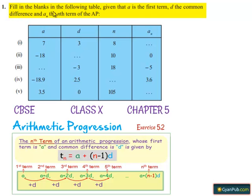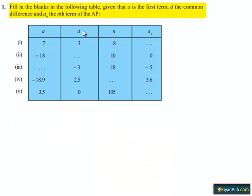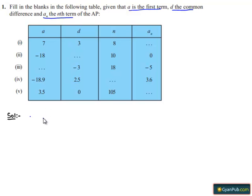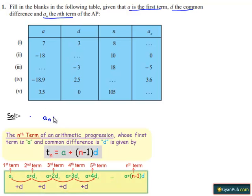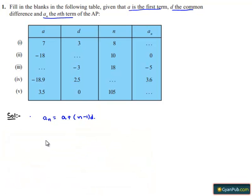Moving on to the first question: fill in the blanks in the following table, given that a is the first term, d is the common difference, and aₙ is the nth term of the AP. We know that the nth term of the arithmetic progression is given by aₙ = a + (n−1) × d. This is the formula to find the nth term of the arithmetic progression.